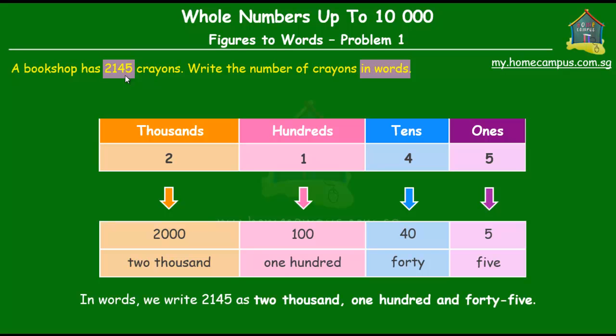So there you go — in words we write two, one, four, five as two thousand one hundred and forty-five, with a hyphen between the words forty and five.